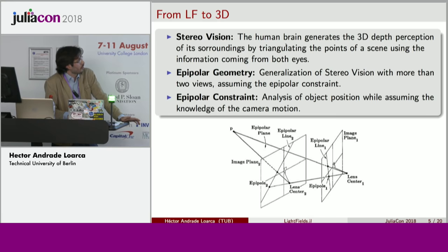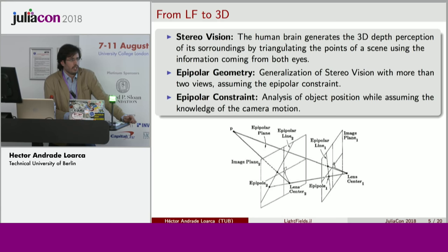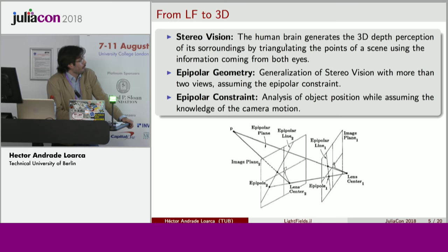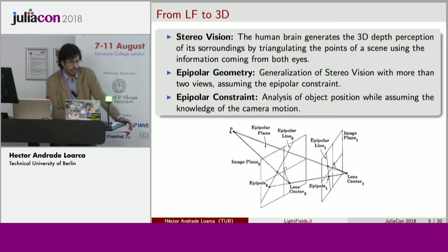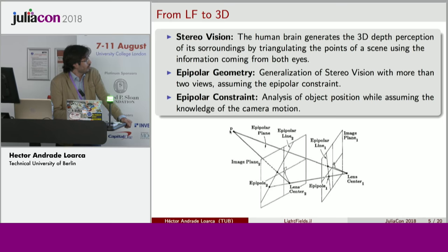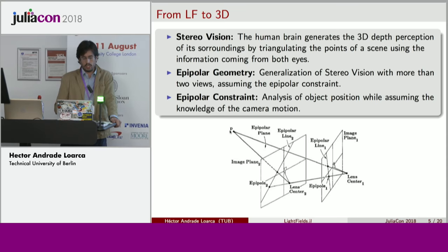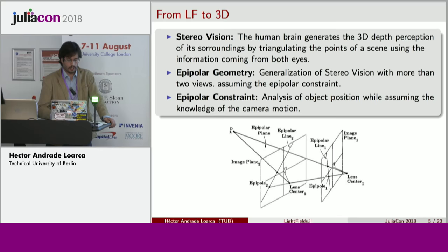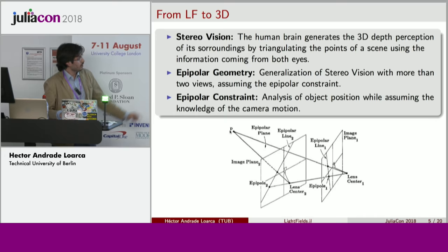Epipolar geometry is a generalization of stereo vision with more than two views. It assumes the epipolar constraint, which means you know the position of the planes — in our case, the position of a camera taking different pictures of a scene — and you analyze the position of points in each plane. It's called epipolar geometry because if you have a point P in the scene and two focal planes of two cameras, the plane formed by this point and the lens centers is called the epipolar plane. The intersection of this epipolar plane with the different camera planes gives epipolar lines, and any point lying in this plane will move along these lines across different views.